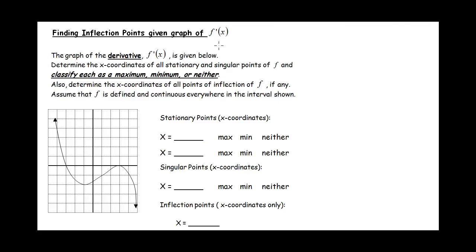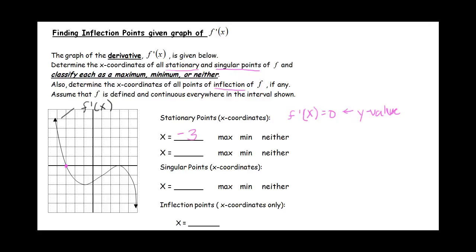Now let's look at what happens when we're given the graph of the first derivative. This time we have to find the x-coordinates of all stationary and singular points and classify them, and also find the inflection points. Note that we can only find x-coordinates, not y-coordinates. Stationary points occur where f prime equals zero, so we're looking for x-intercepts. We have one at x equals negative 3 and another at x equals positive 3.